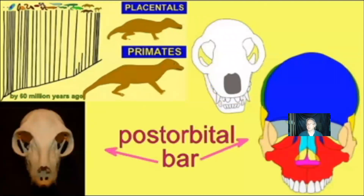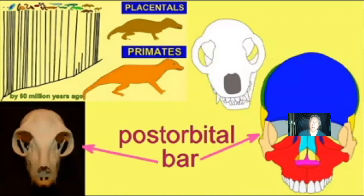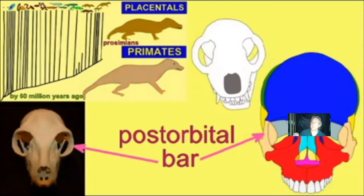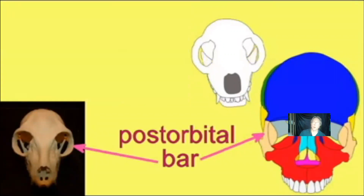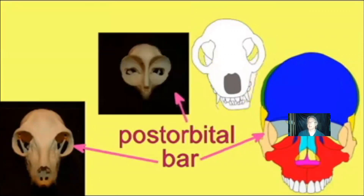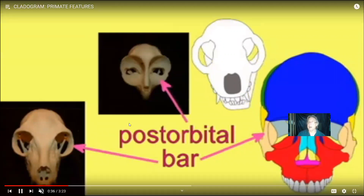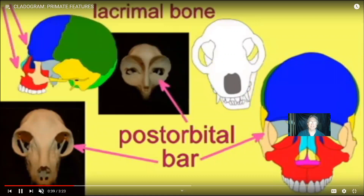You can go through these videos to see if there is anatomical support for these groups. The creation model holds that these are not real groups — they are not biologically connected — and so there is not the expectation that there will be shared features.